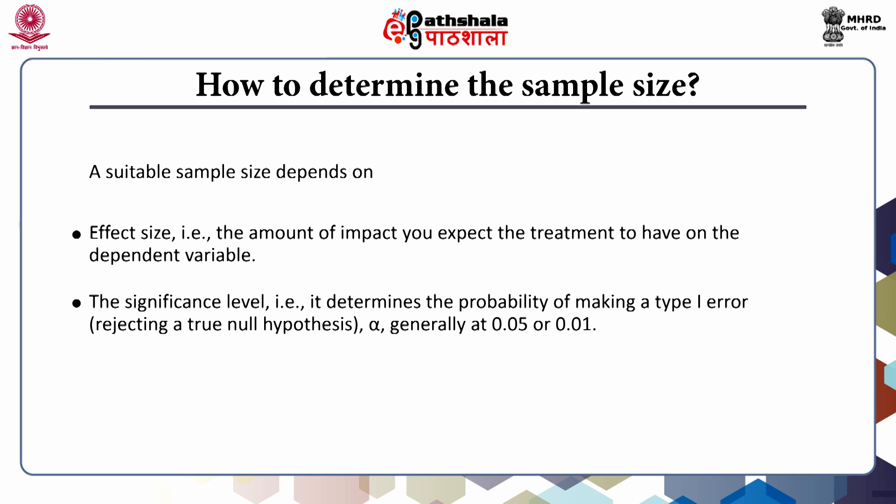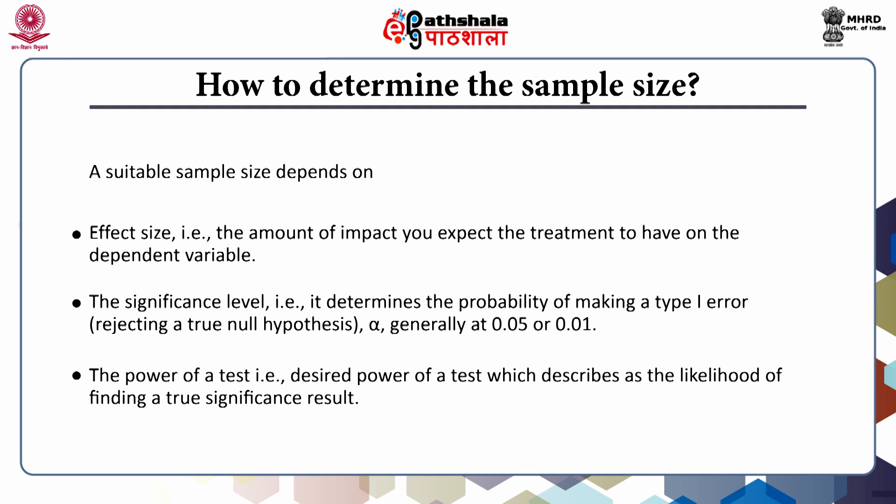It determines the probability of making a Type 1 error, alpha, generally at 0.05 or 0.01. And lastly, the power of a test — that is, the desired power of a test — which describes the likelihood of finding a true significance result.